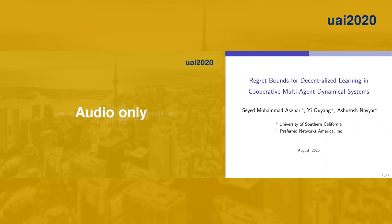Hello everyone, this is Sayyid Mohamed Asari, and I'm going to talk about the regret bounds for decentralized learning in cooperative multi-agent dynamical systems. This is a joint work with BTP, Ouyang, and Ashutaj Nayib.